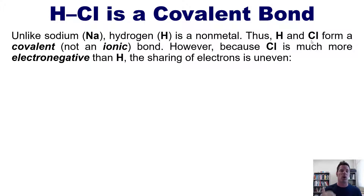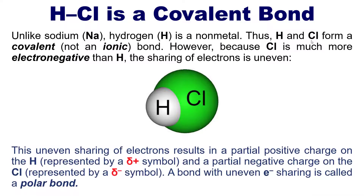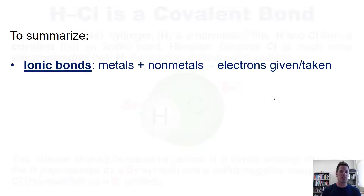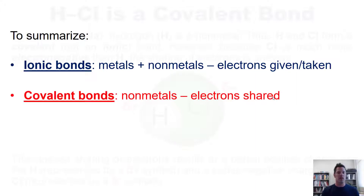However, because chlorine is much more electronegative than hydrogen — being further to the right on the periodic table — the sharing of electrons is uneven. This uneven sharing results in a partial positive charge (δ+) on the hydrogen, since the electrons are being hogged by the chlorine, and a partial negative charge (δ−) on the chlorine. A bond with uneven electron sharing is called a polar bond; perfectly even sharing would make it a non-polar bond. To summarize: ionic bonds involve metals bonded to non-metals, where the metal gives its electrons to the non-metal. Covalent bonds are all non-metals, where they share electrons.